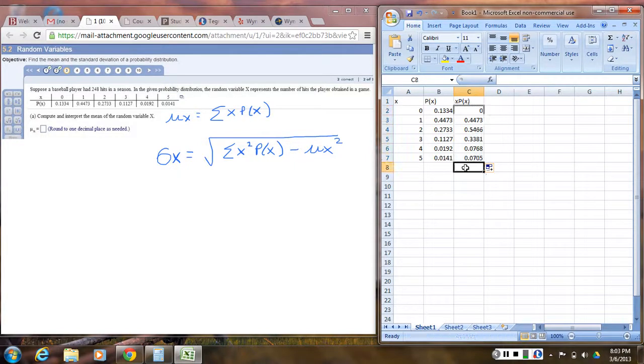Now the formula says I got to add up the X times P of X's. So I'm going to come to the bottom of that column, look for my little sum guy, sum, hit enter. So it looks like I got 1.479. So if you round that to one decimal, it would be an answer of 1.5. So your mean is 1.5. That would be the answer to part A.